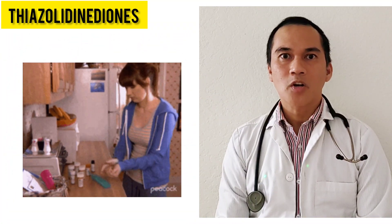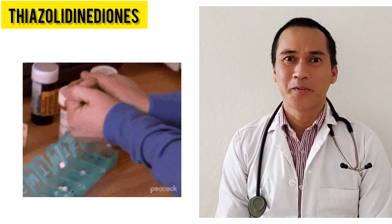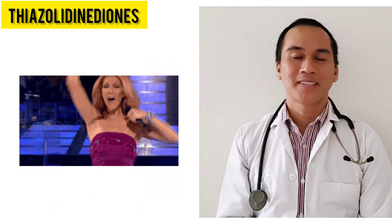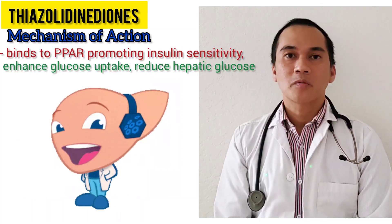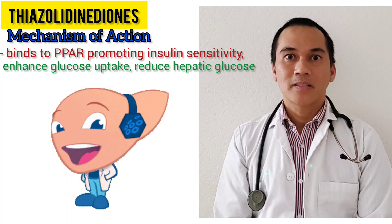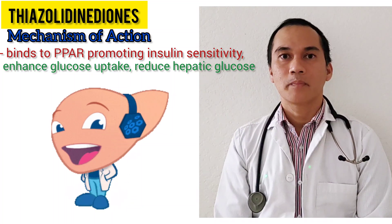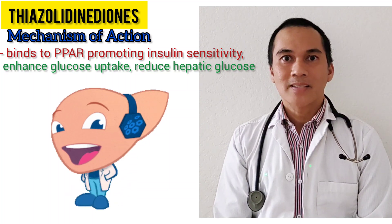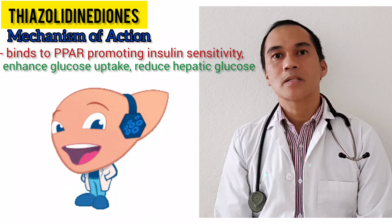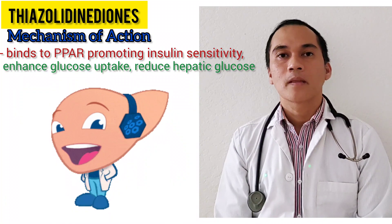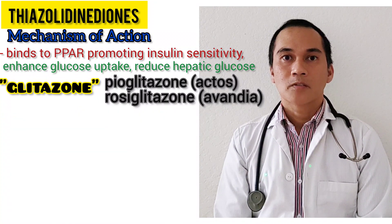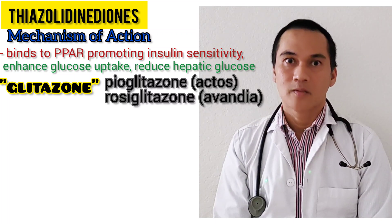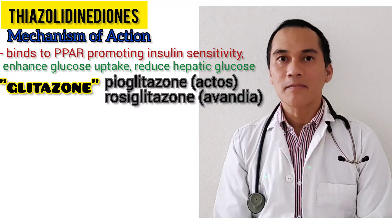Now let's talk about thiazolidinediones — a hard-to-pronounce medication, also called glitazones. This medication binds with peroxisome proliferator-activated receptor gamma, or PPAR-gamma. It increases the body's sensitivity to insulin, reduces hepatic glucose production, and enhances glucose uptake. These are pioglitazone and rosiglitazone.